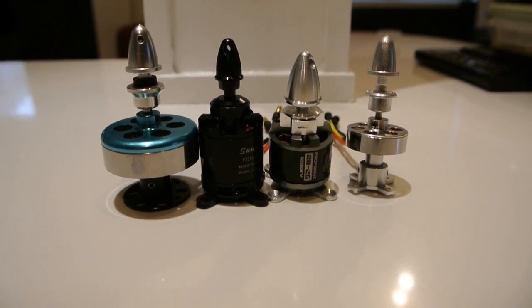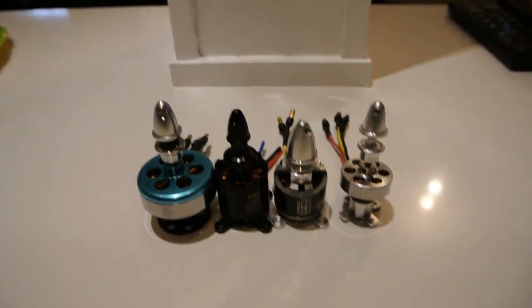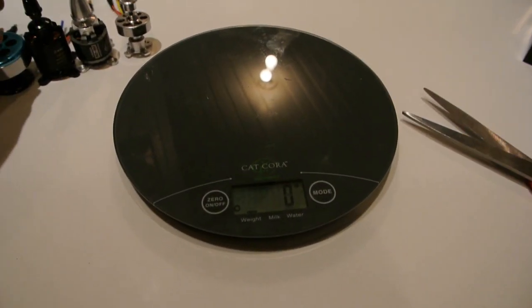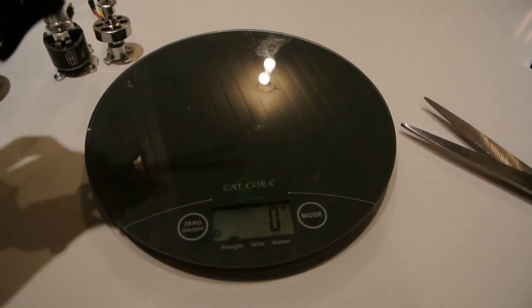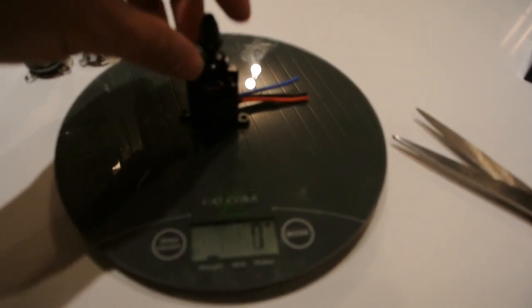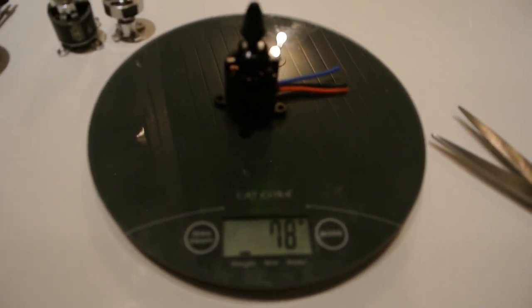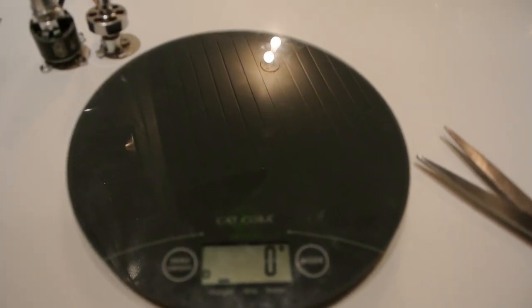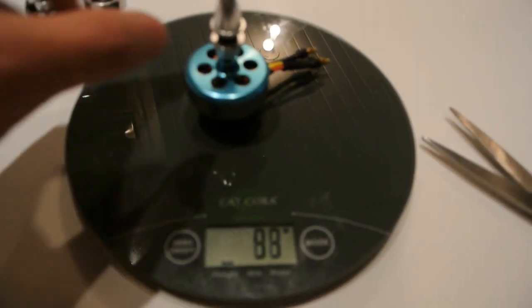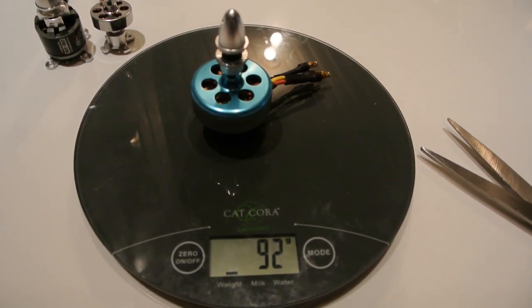So what I'm going to do is also stick it on the scale just to show a comparison of the weight. It's the Sunny Sky and I've also clipped the wires on it. And it comes in with the prop adapter at 78 grams. The DT750 for comparison comes in at 92 grams with the prop adapter.